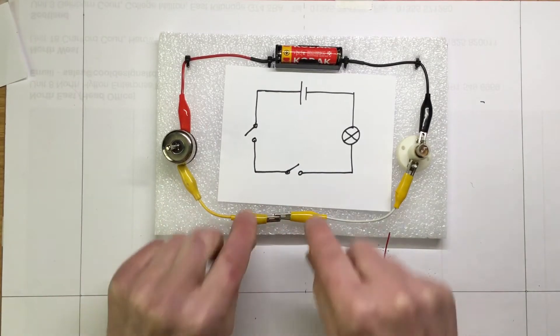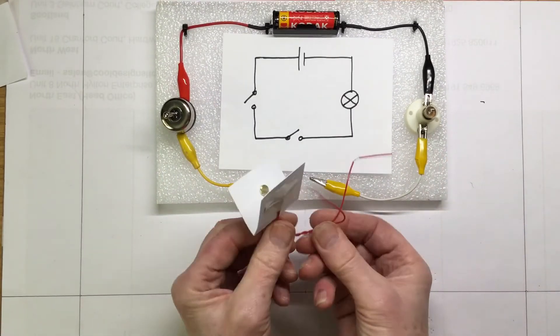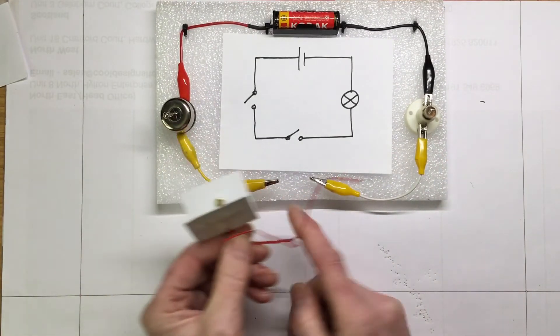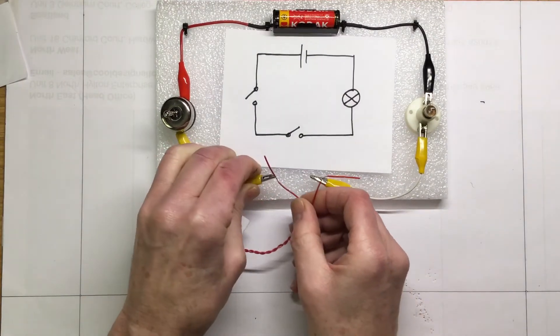So we've got a gap we can create here, and we're going to put in another switch. Well, it doesn't have to be the same type of switch - it could be our very own design of switch, such as a paper clip switch.